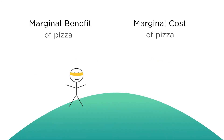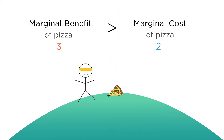With cookies as the alternative, the marginal cost of pizza is 2 and the marginal benefit is 3. Because the marginal benefit is greater than the marginal cost, you'd be better off ordering another slice of pizza rather than settling for a cookie. Even though the pizza slice is twice as expensive as the cookie, it's the better choice since it gives you more than twice the additional benefit to your utility.